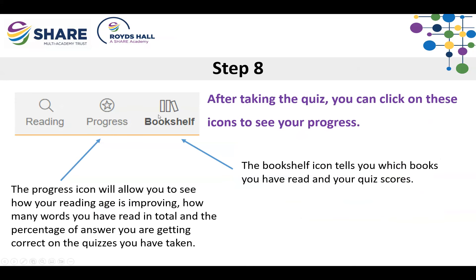Once they've taken the quiz, you can click on the icons in the top right-hand corner with your child to look at their progress. The progress button will tell you what they're reading, how their reading age is improving, how many words they've read in total, and the percentage of answers they've been getting right on quizzes. The bookshelf icon will show which books they've read and their quiz scores, so you'll be able to see what they've actually been doing.